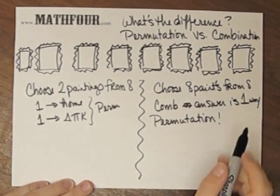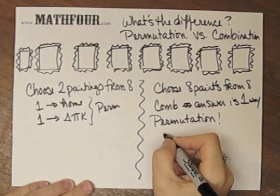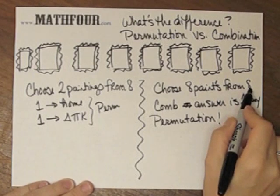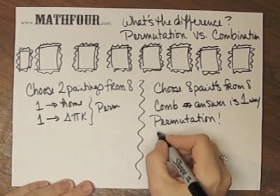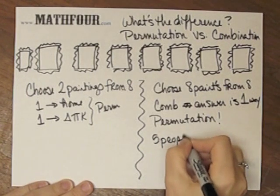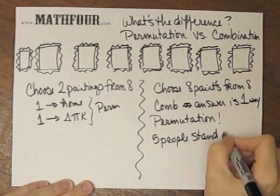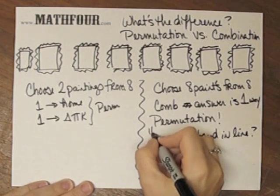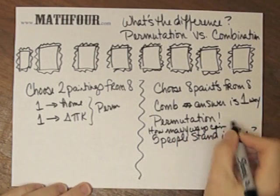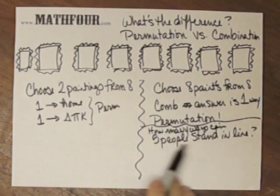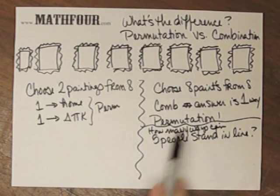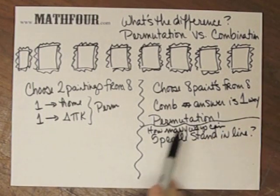Oftentimes, a textbook or question will not have how many to choose from and how many from which to choose. So you might see the question written as 'five people. How many ways can five people stand in line?' When you have a question like that, you don't have it clearly said we have five people and we're going to choose five.